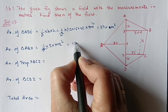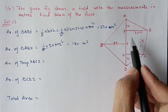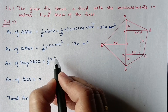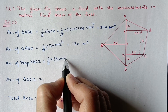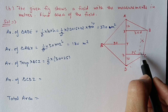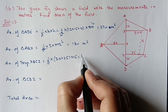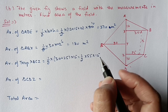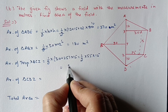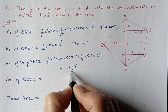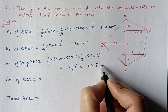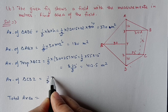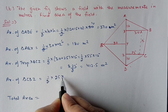Area of triangle ABX: half × base × height. Base is 30 and height is 12, so area = 180 m². For the trapezium: half × sum of parallel sides × height. Parallel sides are 30 and 25, distance between them is 15. So: half × 55 × 15 = 825/2 = 412.5 m².